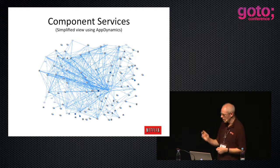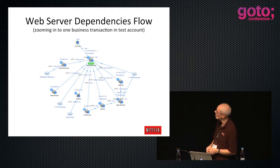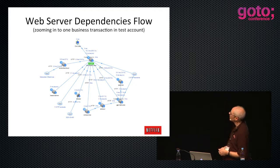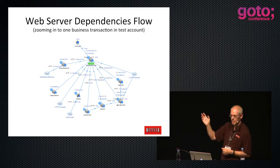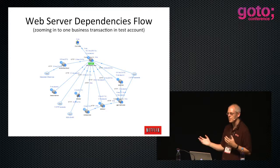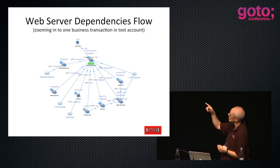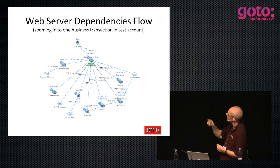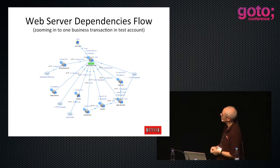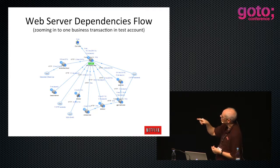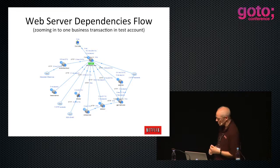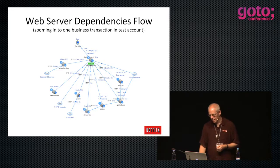If you pick one service - say our web front end - it looks like this. This is a view from AppDynamics, which does Java bytecode instrumentation and measures flows through all our code. You see an end user calls the web service and it's talking to a whole bunch of other bits and pieces - there's a similarity service which finds movies similar to other movies, and a bunch of other things.